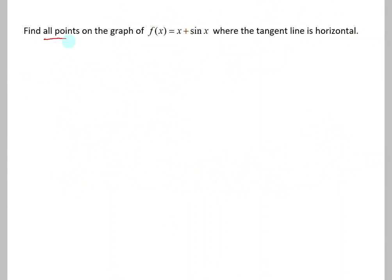Find all points on the graph of f of x equals x plus sin x where the tangent line is horizontal. Remember that a horizontal line has a slope of zero, therefore it will have a derivative of zero. And when it says find all points, they mean all of the ordered pairs x and y.